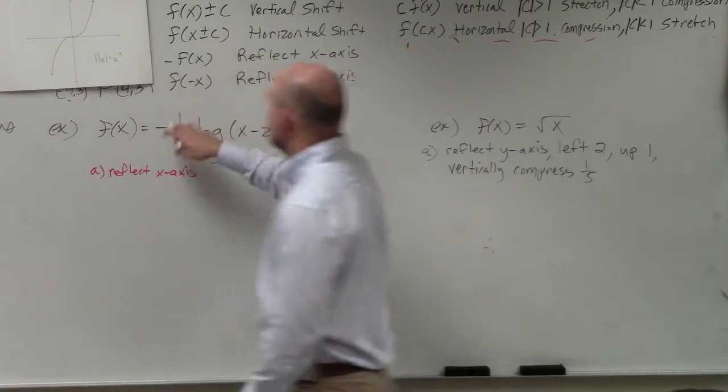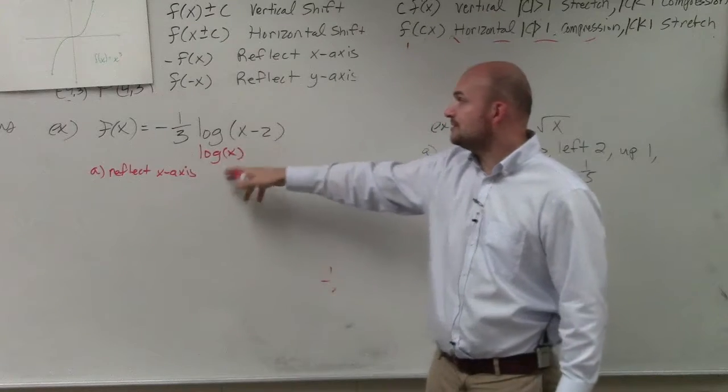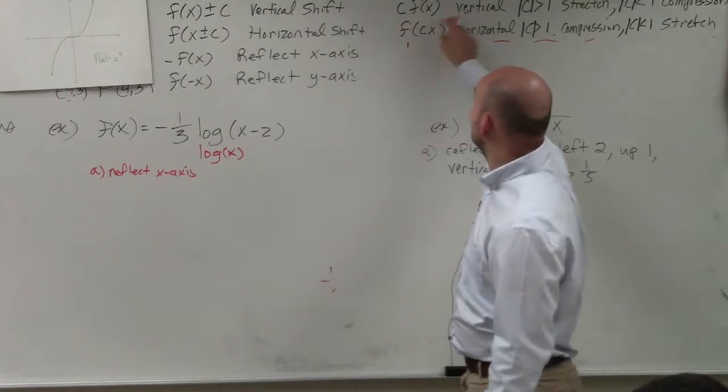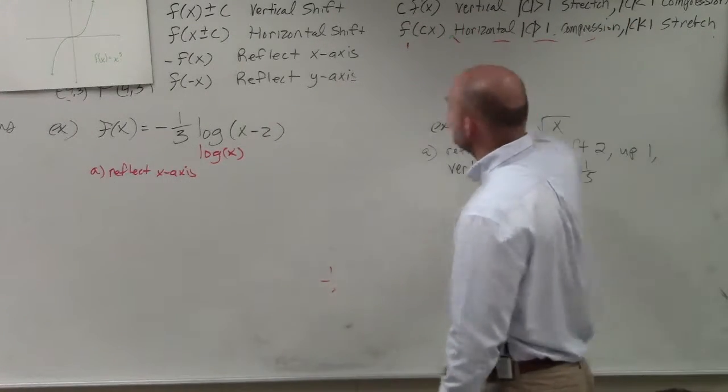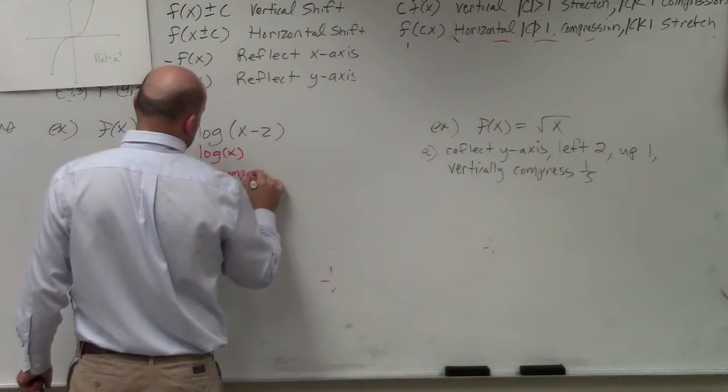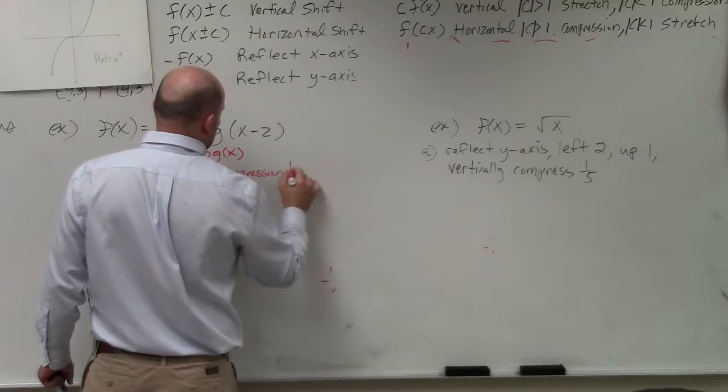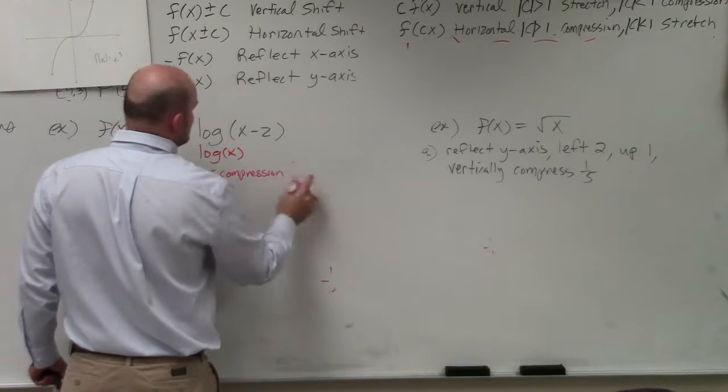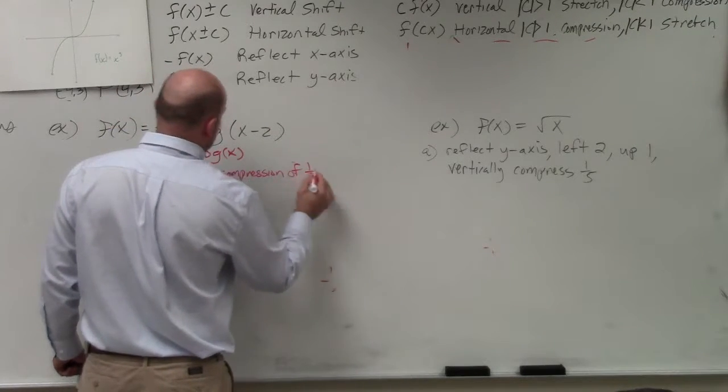You can see now I have a one-third. I'm multiplying the one-third outside the function, so therefore it's vertical. It's less than 1, so it's a vertical compression. And you can just write vertical compression of one-third.